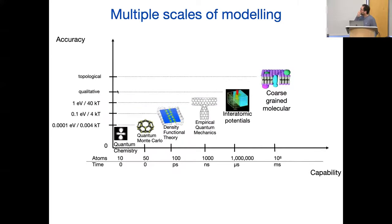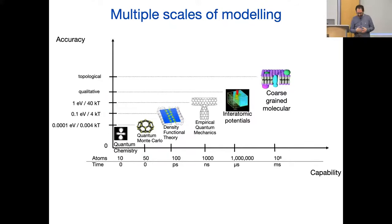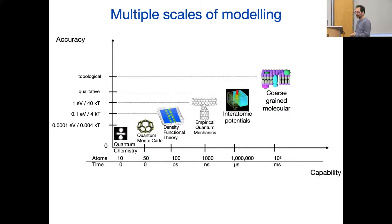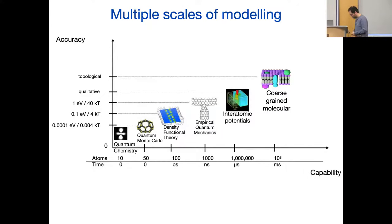I'd like to introduce the talk by making you think about the multiple scales of modeling. If you're thinking about doing molecular dynamics, we actually know how the world works. Down here, as long as you don't have too many atoms — by too many I really mean two, or if they're on the first row maybe four — then we can actually solve the Schrödinger equation.